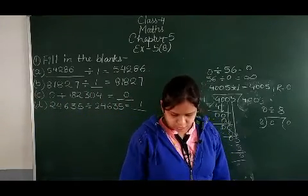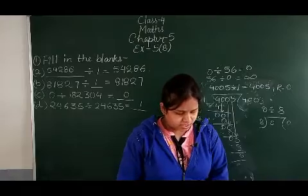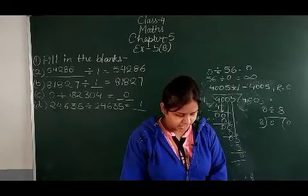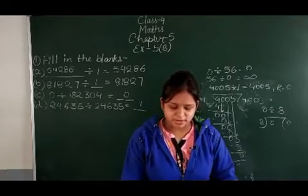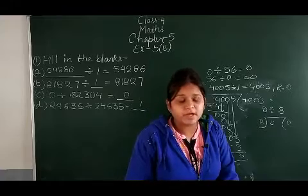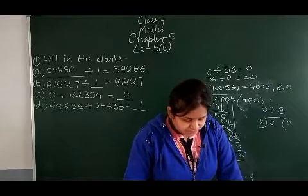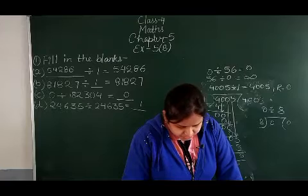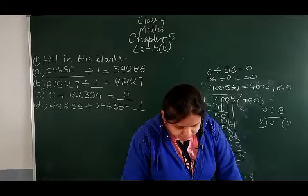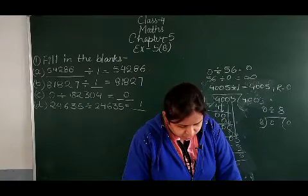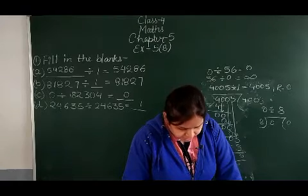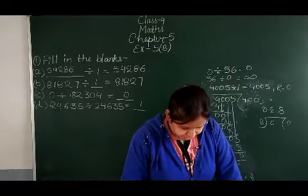Now, division by 10, division by 100, or division by 1000. When the divisor is 10, the digit in the one's place of the dividend becomes the remainder, and the number formed by the remaining digits of the dividend becomes the quotient.